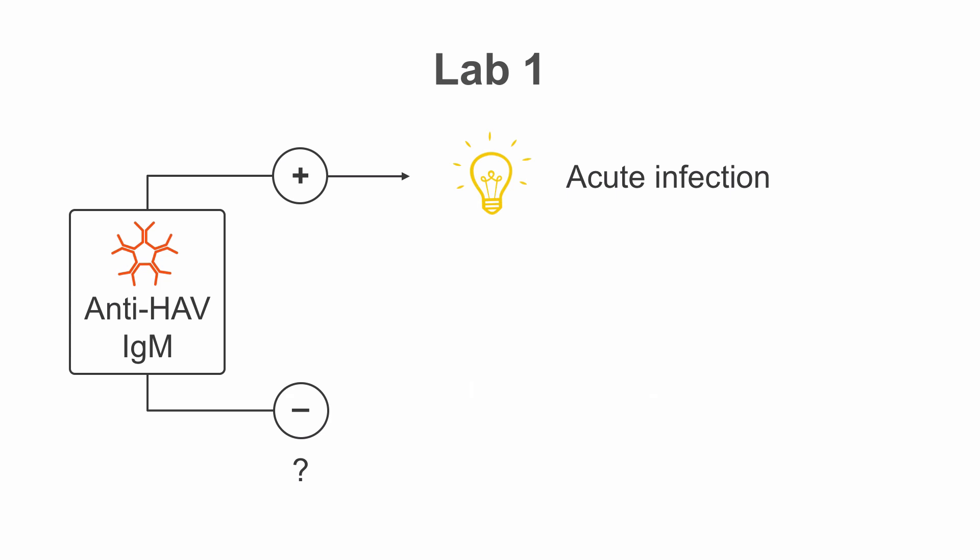However, we might want to get a bigger picture. So we can add another test called anti-AJV. In this test system, IgM and IgG are detected. Since we already know that IgM is negative in our patient, the result of anti-AJV will shed light on the IgG status of our patient.